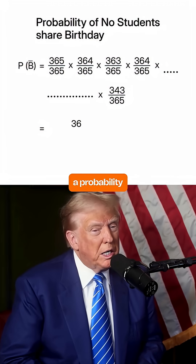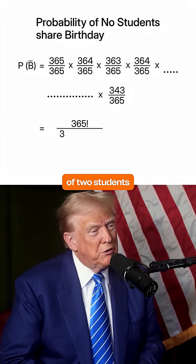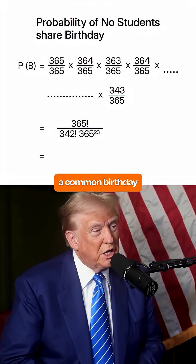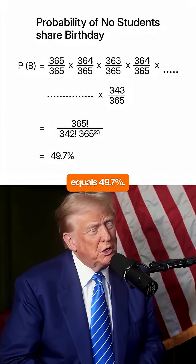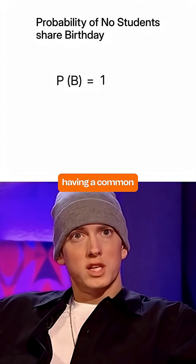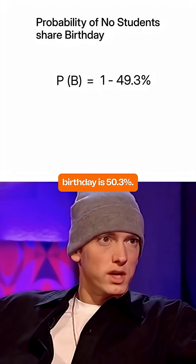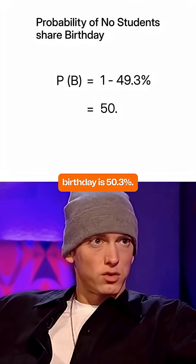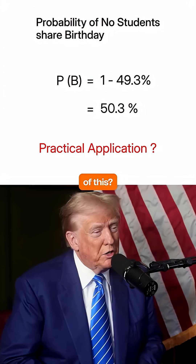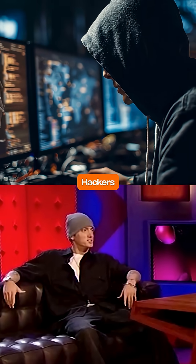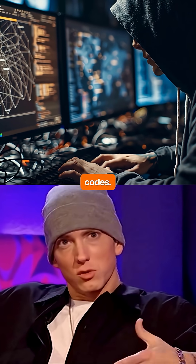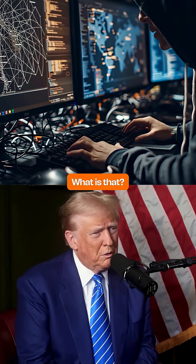So if we solve this, we get a probability of two students not having a common birthday equal to 49.7%. Thus, the probability of two students having a common birthday is 50.3%. Is there any practical application of this? Yes — hackers use this math to break security codes. It's called the birthday attack.